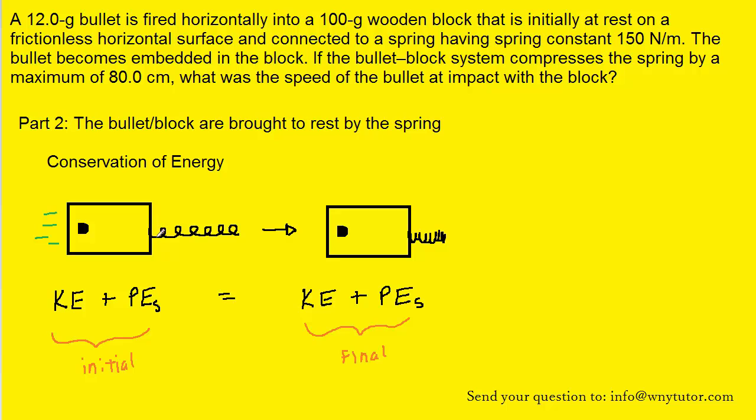Now initially, the spring is uncompressed. It's just in a relaxed form. So in fact, the initial potential energy stored in the spring will be zero. On the other side of the equation, because the bullet and block are being brought to rest, and they're therefore not moving, there will be no kinetic energy on the final side of the equation.